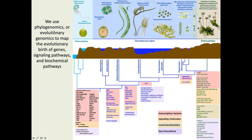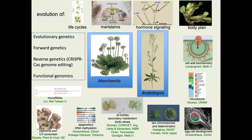We can use phylogenomics, especially with today's genome sequencing capabilities, to map all the different molecular events — the times at which genes are born in evolution and the times at which signaling pathways evolve. We're interested in this big diversity as something that happened between the last green algal lineage and land plants, where many pathways and some biochemistry were assembled, leading to major developmental changes.